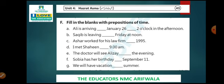Number A: Ali is arriving on January 26th at 2 o'clock in the afternoon. In the first blank we use 'on' — on January 26th — because we use 'on' with the name of the month and date. With time, 2 o'clock, we use 'at' — at 2 o'clock in the afternoon. Number B: Saqib is leaving on Friday at noon. With names of the week, we use 'on' — on Friday.